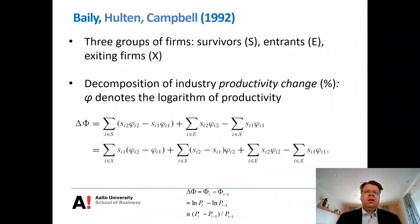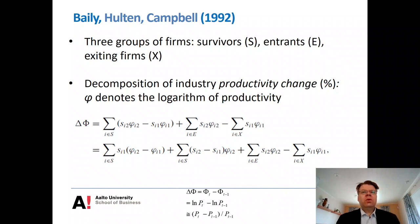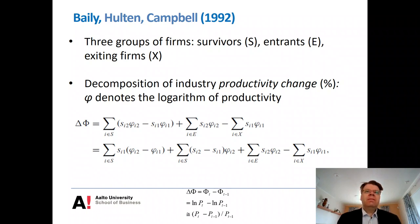I also mentioned a couple of other studies that looked at entry and exit in the industrial organization literature. One is the early paper by Bailey, Hulten, and Campbell in 1992 — initially it was not really influential, but over time this contribution has been recognized. In contrast to Olley and Pakes, this study distinguishes explicitly the impact of entry and exit. They classify the data into three exclusive subgroups: survivors (S), entrants (E), and exiting firms (X), and use this grouping to decompose productivity change.